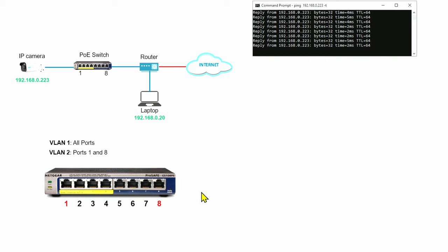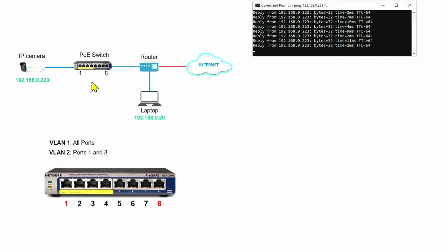So now let's start playing with the VLAN. Basically, here I have VLAN number one which has all the ports. We are going to create a VLAN number two with ports number one and eight — those ports that have the camera and the router. So let's do that.